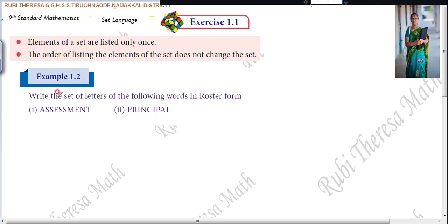Example 1.2: Write the set of letters of the following words in roster form - Assessment, Principal. So here they have used A. Just take X to represent the set. Other than these alphabets, just choose.